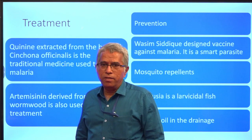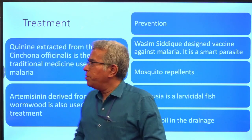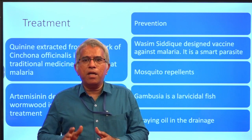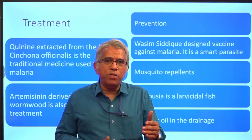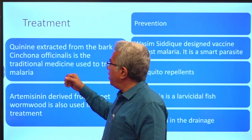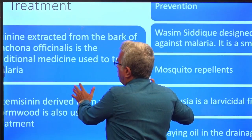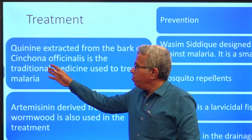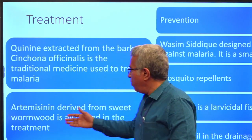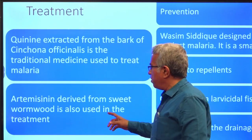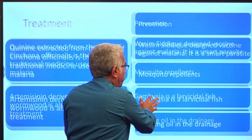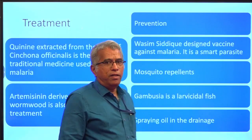Coming to treatment: nowadays treatment is well developed. There are certain tablets called Laria Go tablets that can be used to treat malaria — 'laria' means mosquito. Quinine is a traditional medicine used to treat malaria, extracted from the bark of Cinchona officinalis. Artemisinin, derived from sweet wormwood, is also used in the treatment of malaria. This covers the malaria parasite, its life cycle, and prevention and treatment.